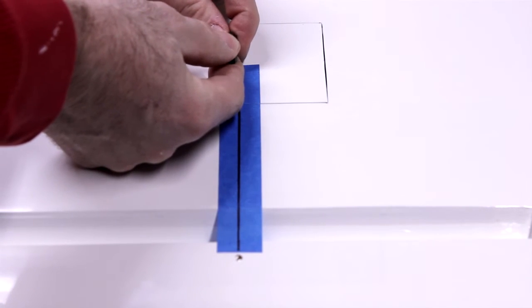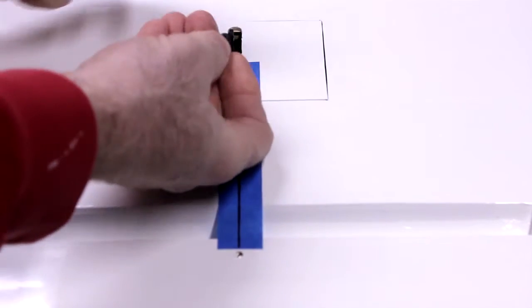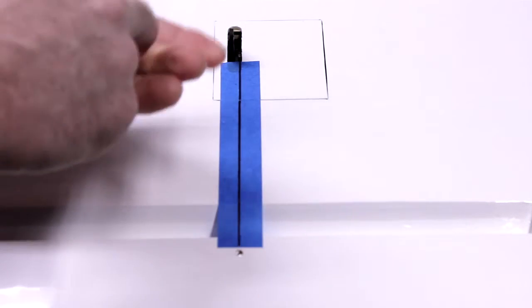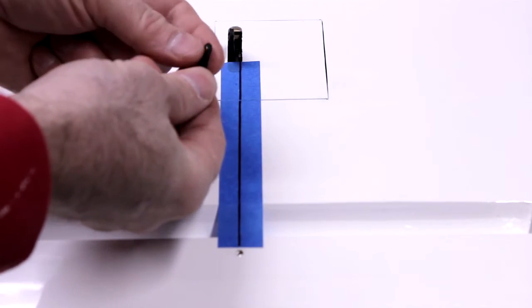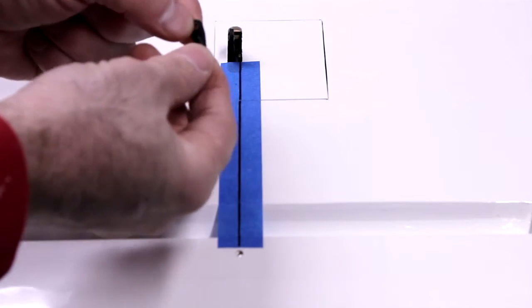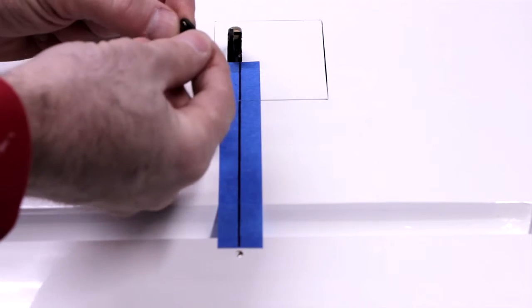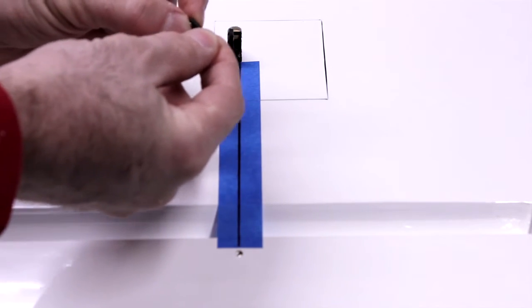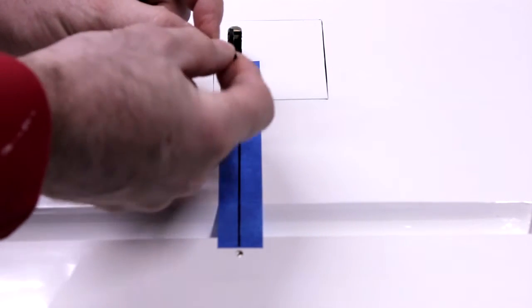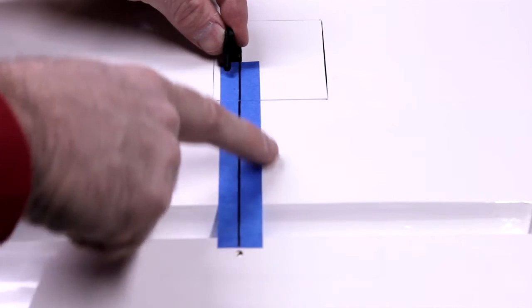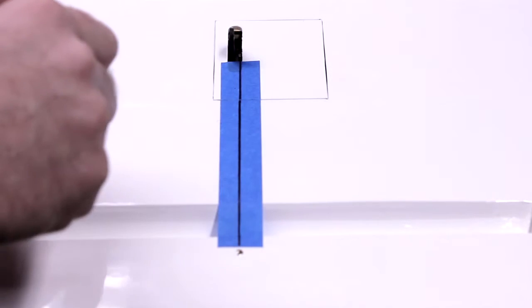A lot of times people will take a clevis type rod end and replace it with a ball link. This is a ball link and it's got a little ball joint molded into the nylon. That has a little bit of side freedom of motion as well as up and down, and when you use that, this alignment becomes a little bit less critical.